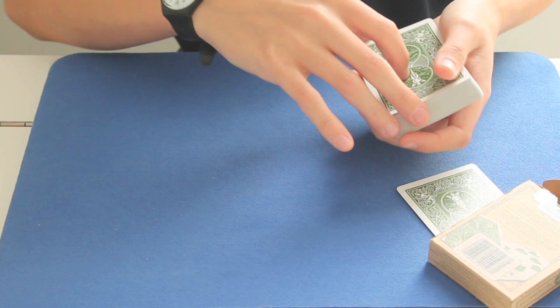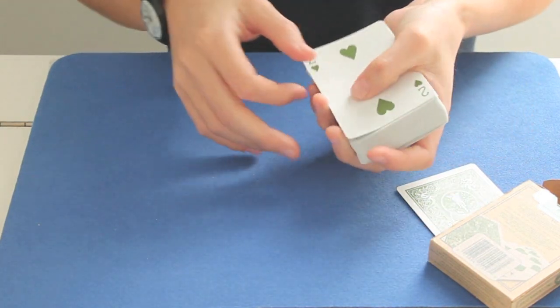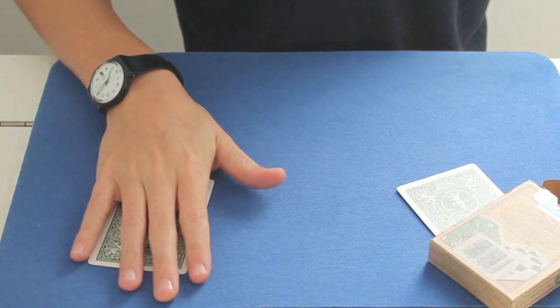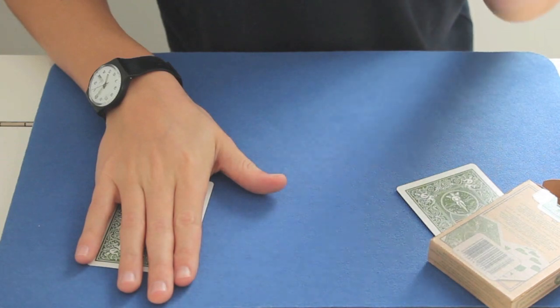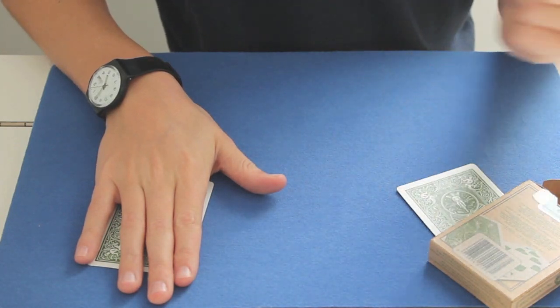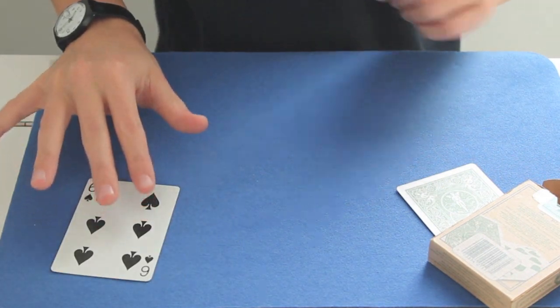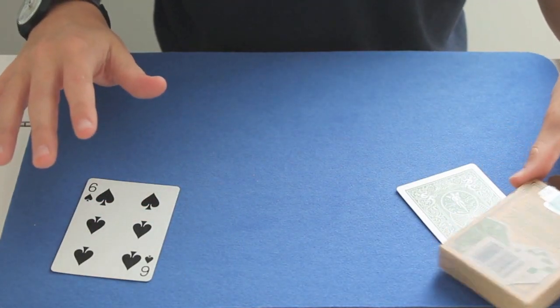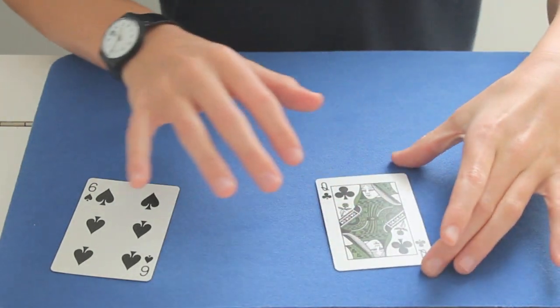And I'm going to take the second card from the top, the two of hearts, like this. But, I'm quite jealous of the card you have, so I'm simply going to snap my fingers and now look, under my hand is the six of spades. And under the box, nobody touched it, is your card, the queen of clubs.